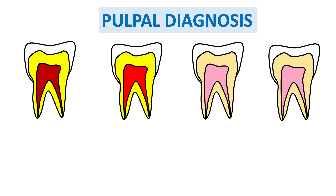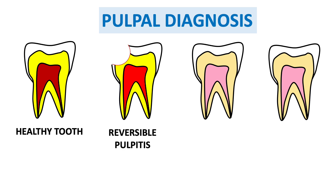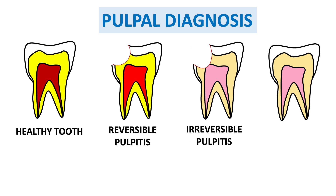Look at the figure. The first one shows a healthy tooth — no caries, nothing — with a vital pulp. The second one is a slightly decayed or carious tooth that does not involve the pulp, with slight inflammation of the pulp. This is a case of reversible pulpitis, where the pulp can return to normal.